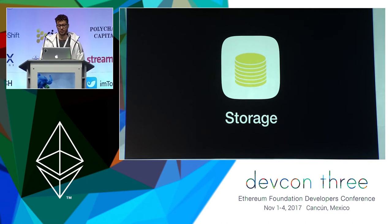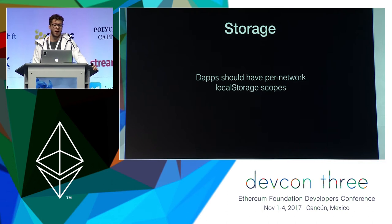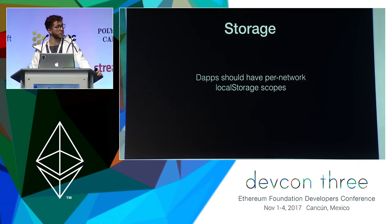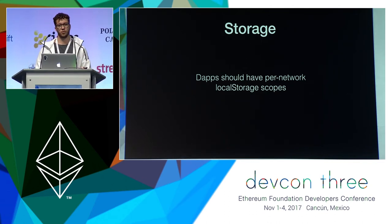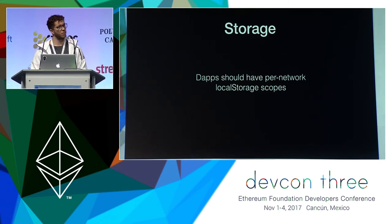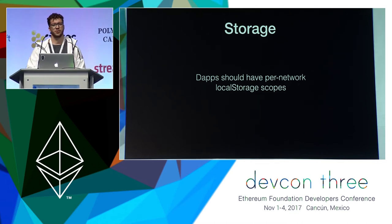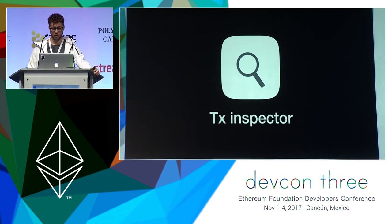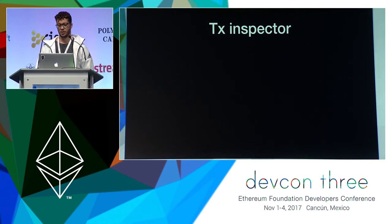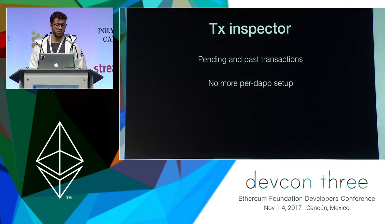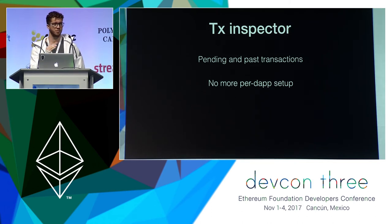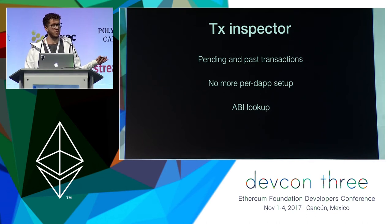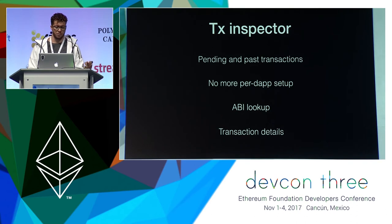There's also important news for dApp developers: we're planning to isolate local storage between networks, so you would have different scopes to work with. The dApp developer wouldn't have to worry about mixing mainnet storage with other networks. Also, a transaction specter — it's time for us to have one. We would show pending and past transactions. No more per-dApp setup, since the wallet already handles all its transactions and history. All with ABI lookup, so you would see the methods in a directory search and see the transaction details perfectly.